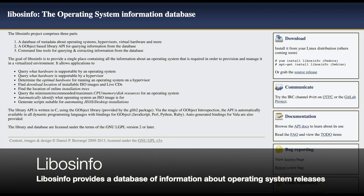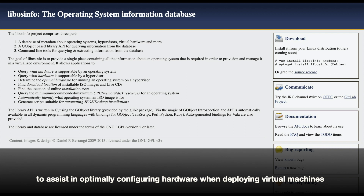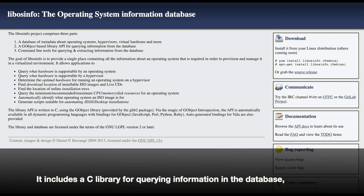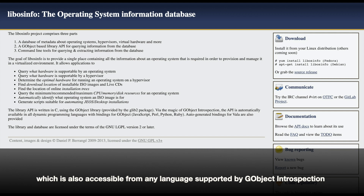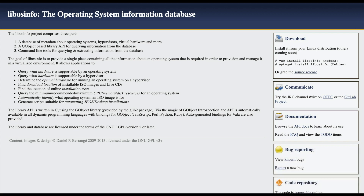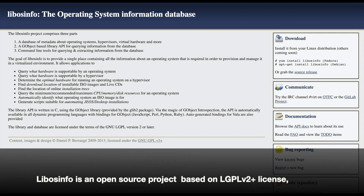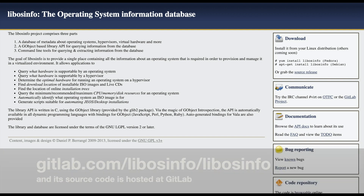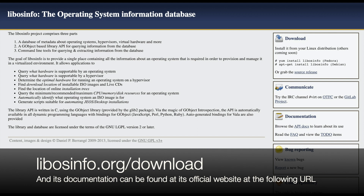Lastly, but not least, we have LibOSInfo. LibOSInfo provides a database of information about operating systems to assist in optimally configuring hardware when deploying virtual machines. It includes a C library for querying information in the database, which is also accessible from any language supported by GObject introspection. This is more of a building block to enable operating system functionality, but quite an important one. LibOSInfo is an open-source project based on LGPL version 2 license, and its source code is at GitHub. Its documentation can be found at its official website.